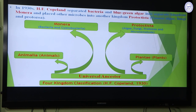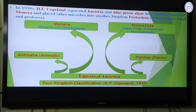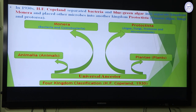With the increase of knowledge and development of various techniques, H.F. Copeland in the 1930s proposed a fourth kingdom — separating bacteria and blue-green algae into a separate kingdom called Monera, and placing other microbes such as algae, fungi, and protozoa into another kingdom called Protoctista. The four kingdoms thus were: Animalia (animals), Plantae (plants), Monera (bacteria and cyanobacteria), and Protoctista (algae, fungi, protozoa, and micro-nematodes).